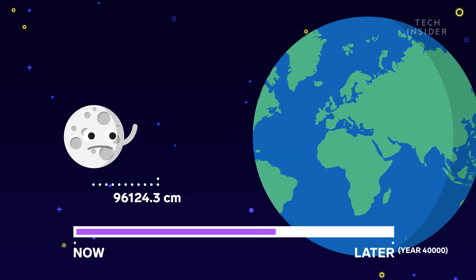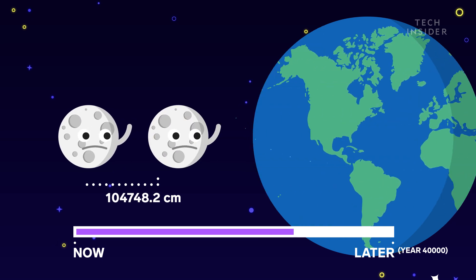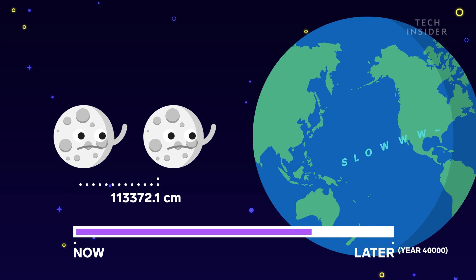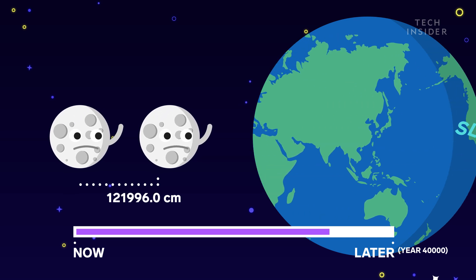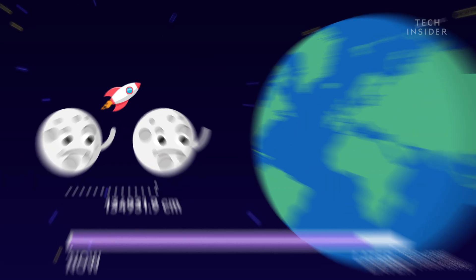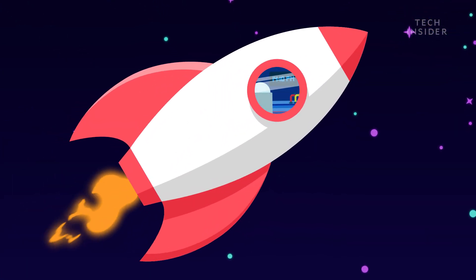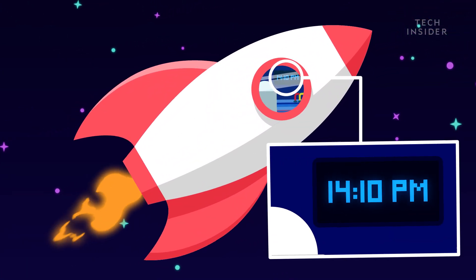It may not sound like much, but with two moons in place, it would accelerate this process even more. Millions of years from now, the day will have grown by 16%, lasting longer than 28 hours.